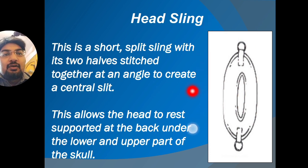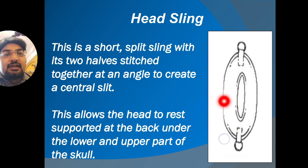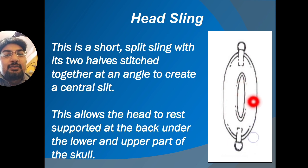The last sling is the head sling. It is a short split sling with its two halves stitched together at an angle to create a central slit. This allows the head to rest supported at the back, under the lower and upper part of the skull.